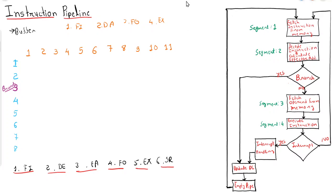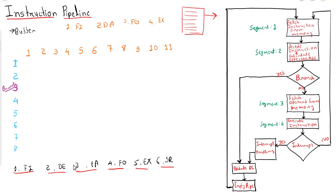If we want to implement an instruction pipeline, we require one buffer. In that buffer all the instructions to be executed will be stored, and then one by one those instructions will be forwarded to the pipeline for execution. The general phases of instruction are: fetching the instruction, decoding the instruction, calculating the effective address of operand, fetching the operand, execute, and storing the result.